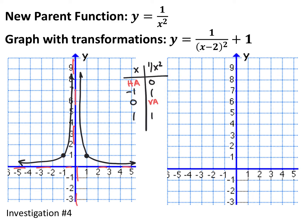We have a new parent function: y equals 1 over x squared. In the past, we've looked at y equals 1 over x, and this is similar. The difference is now your denominator is squared. I still have a horizontal asymptote at y equals 0 and a vertical asymptote at x equals 0. If I plug in negative 1, 1 divided by negative 1 squared is positive 1. And if I plug in 1, I also get positive 1. So unlike 1 over x, which is in the first and third quadrants, 1 over x squared is in the first and second quadrants.